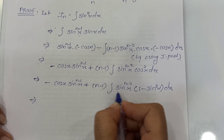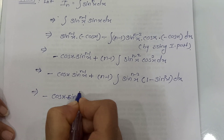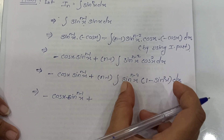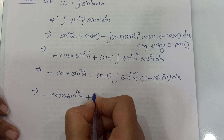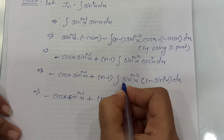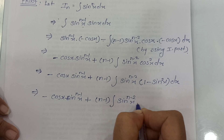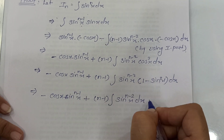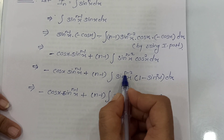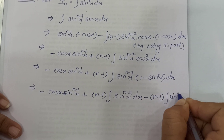Now open the brackets and separate the integration sign. We have minus cos x sin raised to n minus 1 x, plus n minus 1 integration of sin raised to n minus 2 x dx, then minus n minus 1 integration of sin raised to n minus 2 x into sin squared x, which is sin raised to n x dx.